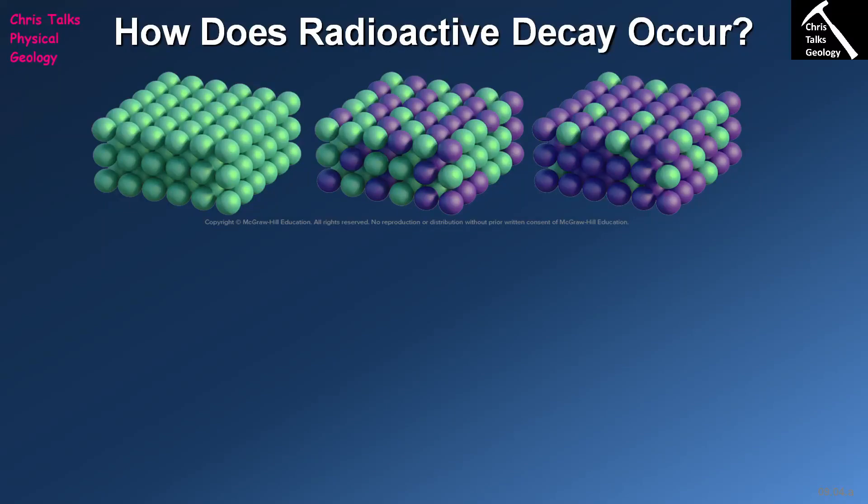Hello everybody, this is Dr. Christopher White, and in this presentation we're going to continue looking at geologic time. The next question we're going to address is how do we produce absolute ages for a rock? Absolute age dating, also referred to as numerical dating or radiometric dating, is a process that essentially allows us to produce a numerical age for a rock using radioactive decay. This presentation corresponds to section 9.4 of your textbook.